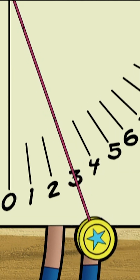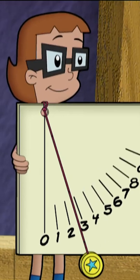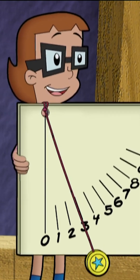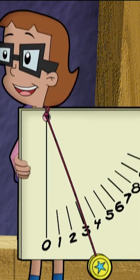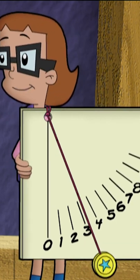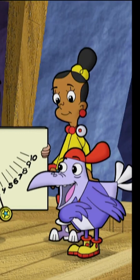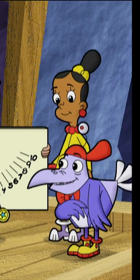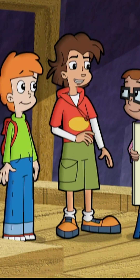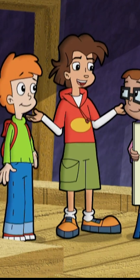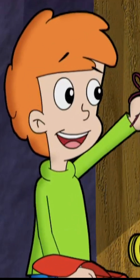Yeah! Hey! We made a wind gauge! Now we'll know that a number 3 wind at Gusty Isle is the same as a number 3 wind at Breezy Point. Let's go measure those other places. It'll go a lot faster if you each measure a different place. No problem! We can make more wind gauges.